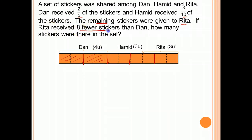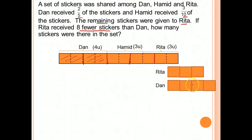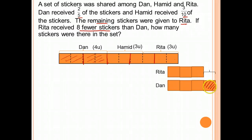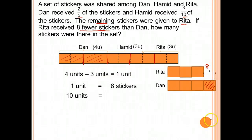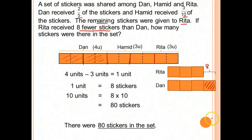If Rita received 8 fewer stickers than Dan: Rita is 3 units and Dan is 4 units. The difference is 1 unit, which equals 8 stickers. Therefore, 1 unit is 8 stickers, and 10 units would be 8 times 10, which is 80 stickers. So there were 80 stickers in the set.